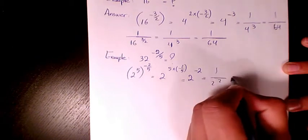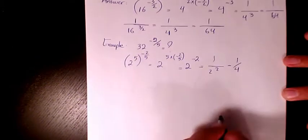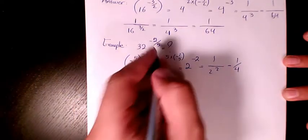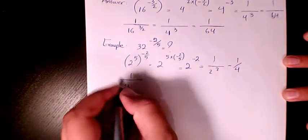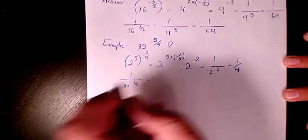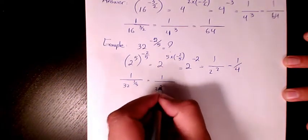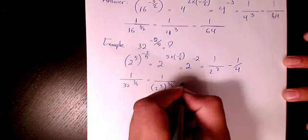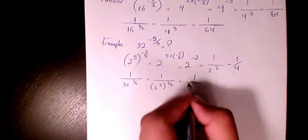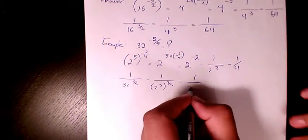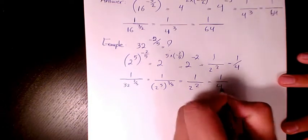That gives us 1 over 2 squared, which is 1 over 4. Alternatively, you can write it as 1 over 32 to the power of 2 over 5, which equals 1 over 2 to the power of 5 times 2 over 5. The 5s cancel out, giving 1 over 2 squared, or 1 over 4.